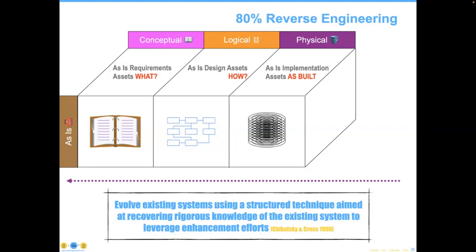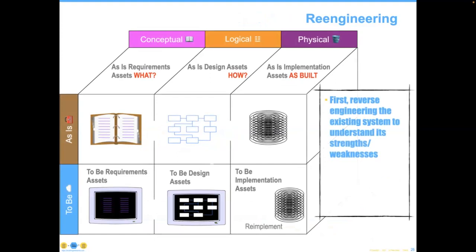As my friend Elliot Tchaikovsky wrote: reverse engineering involves evolving existing systems using a structured technique aimed at recovering rigorous knowledge of the existing system to leverage enhancement efforts. We want to go from physical as-is to logical as-is, and logical as-is to conceptual as-is. If we need to change the requirements, we do so; if not, we can stop at the logical level. The re-engineering process — which most organizations are attempting but doing poorly — is to reverse engineer existing systems. After all, if you don't understand the existing system's strengths and weaknesses, how are you going to avoid replicating the bad stuff?